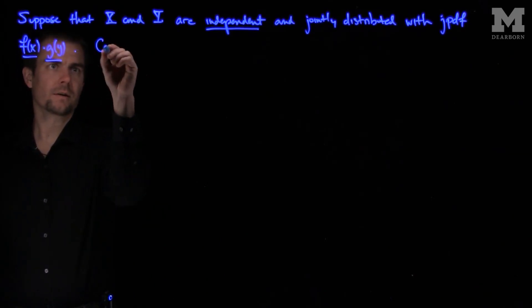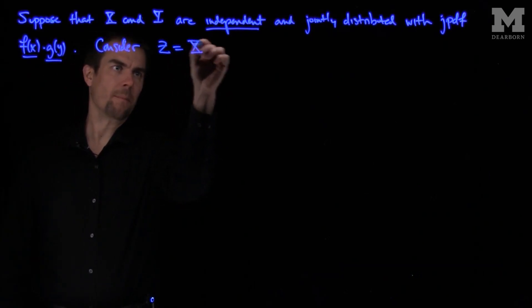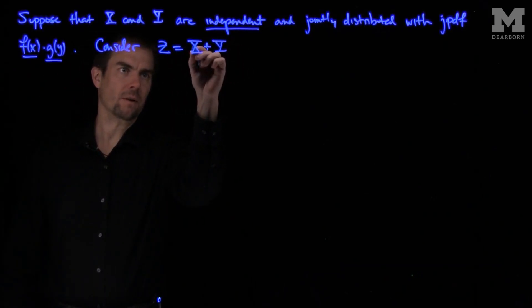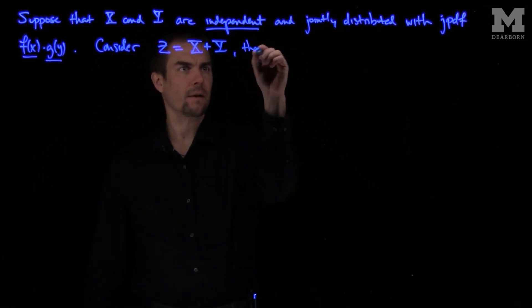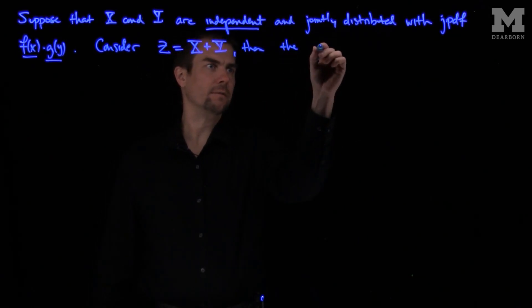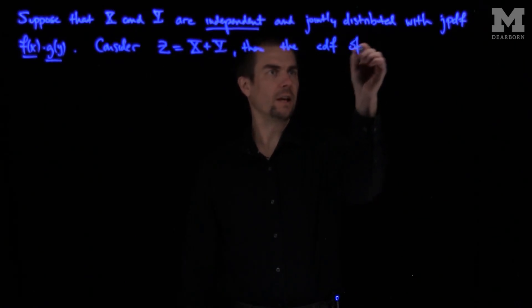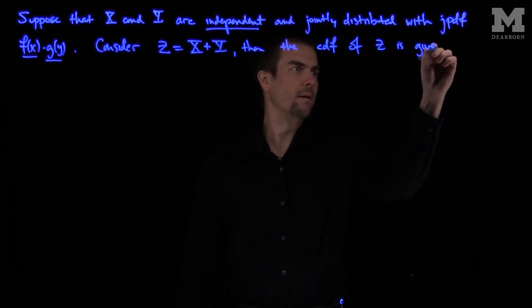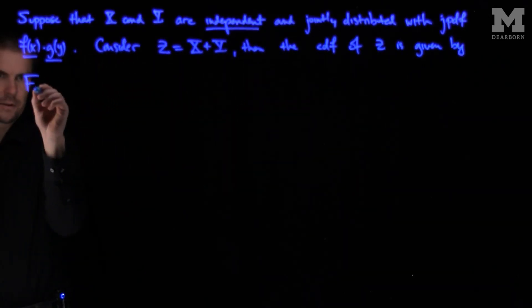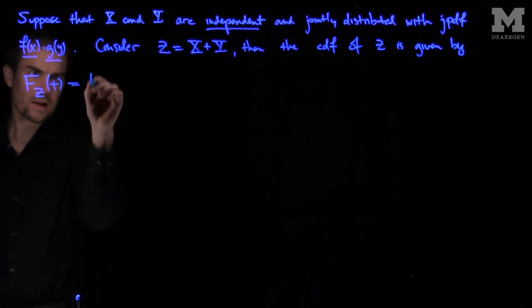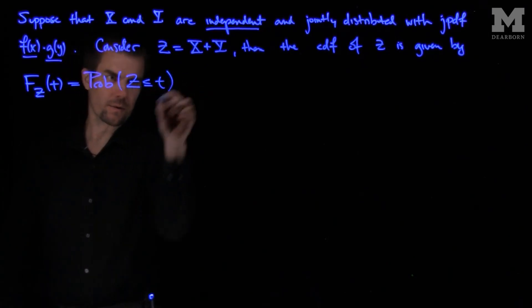Then, consider the random variable Z, which is the sum of the random variable X and the random variable Y. What we'll do is find the CDF, cumulative density function, of Z, which is given by the formula F sub Z of t is the probability that Z is less than or equal to t.